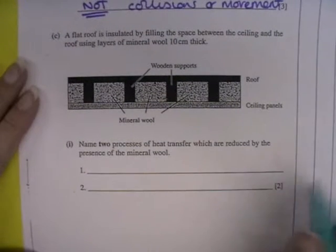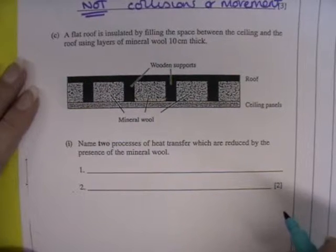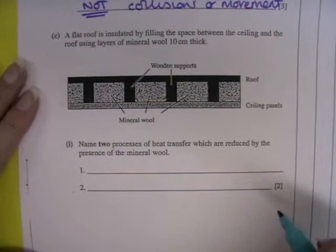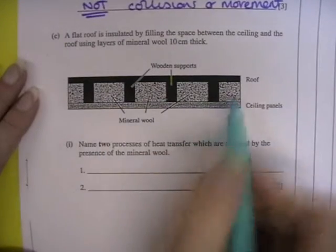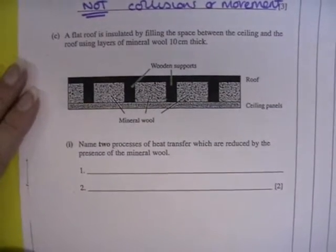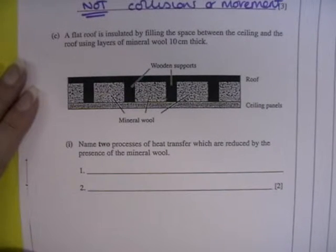A flat roof is insulated by filling the space between the ceiling and the roof using layers of mineral wool, 10cm thick. So we have the ceiling panels, the roof and we have sections of mineral wool in between. Name two processes of heat transfer which are reduced by the presence of the mineral wool.